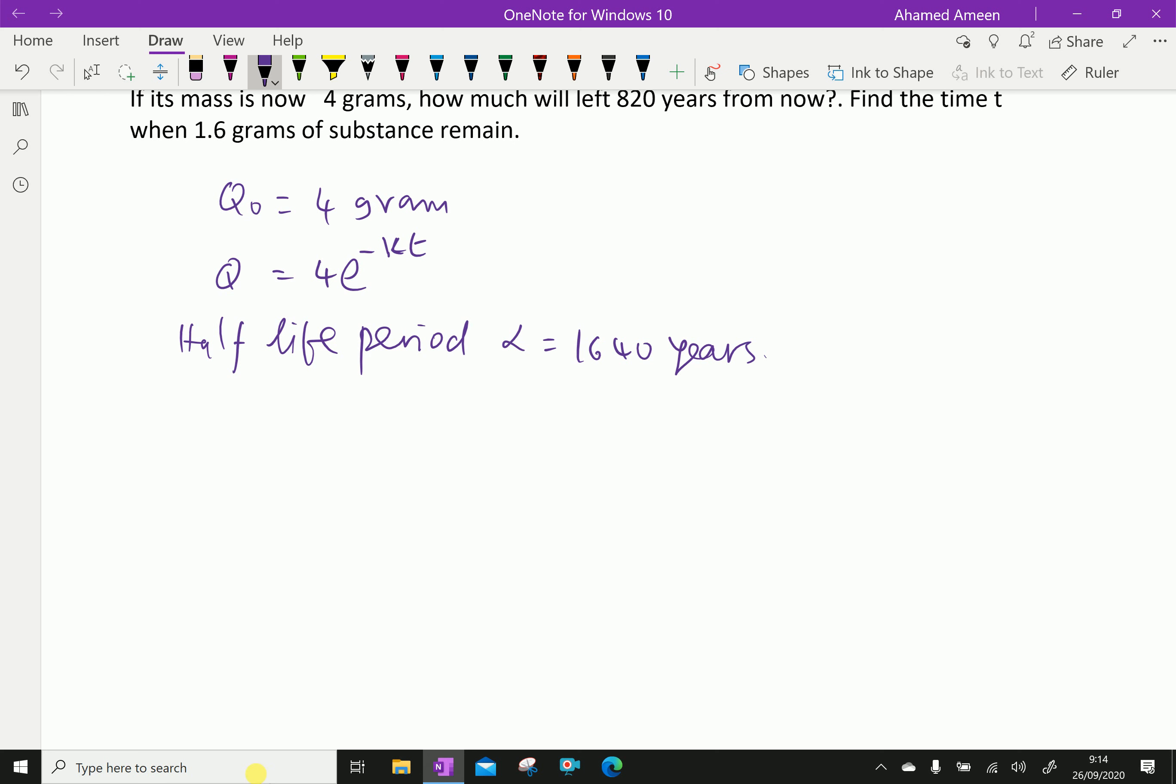Then k equals ln 2 over the half-life period, that is ln 2 over 1640, which gives approximately 0.000423.